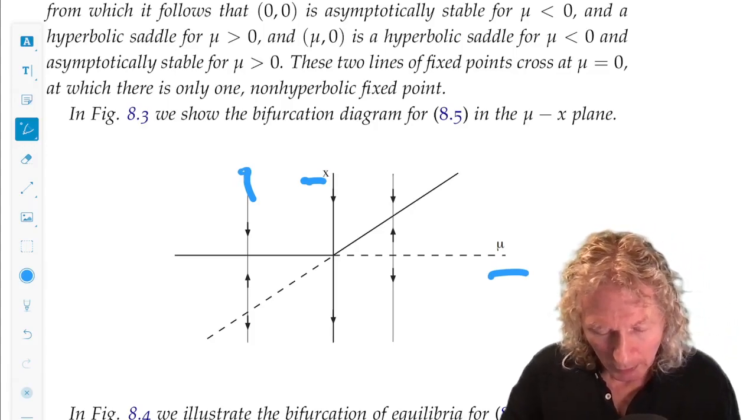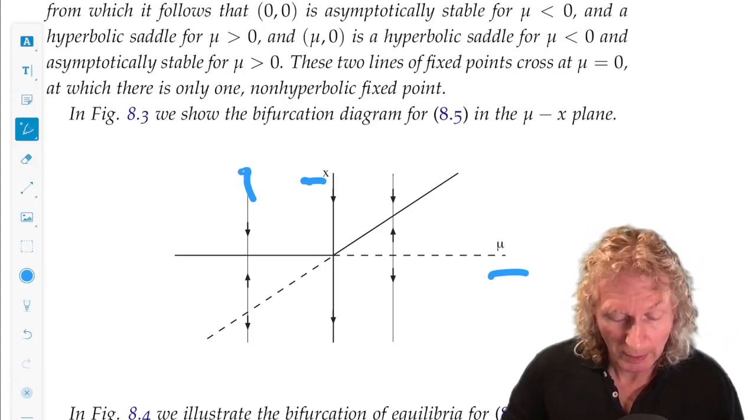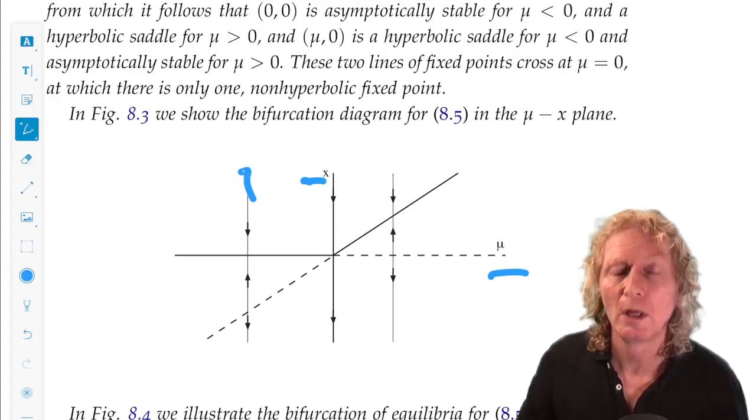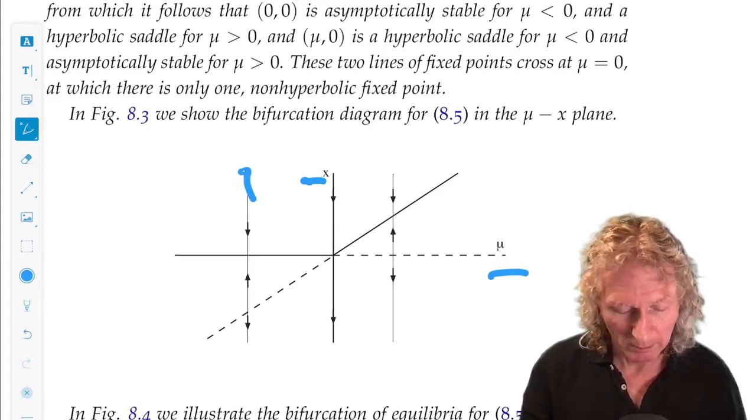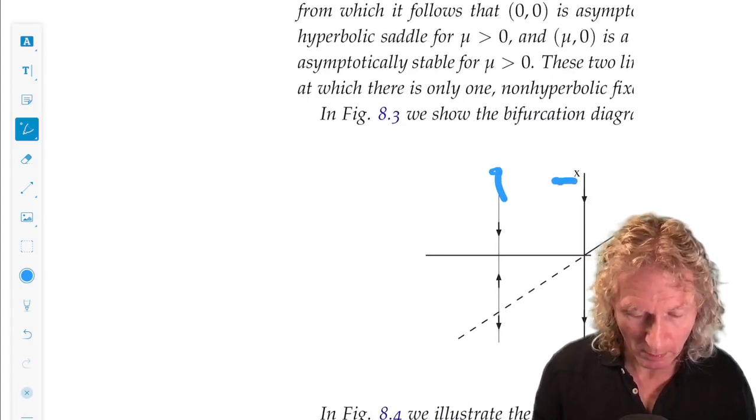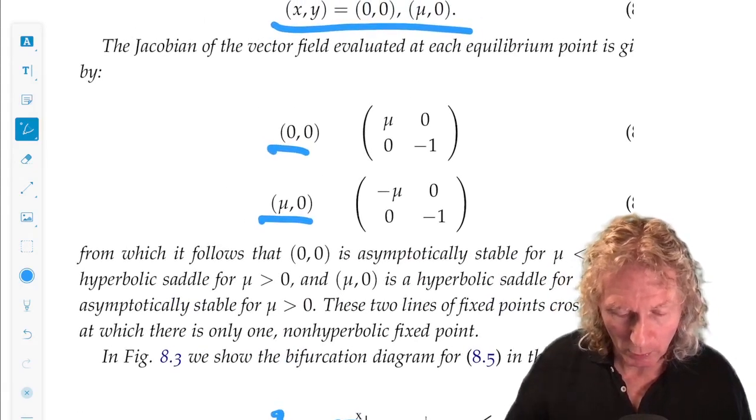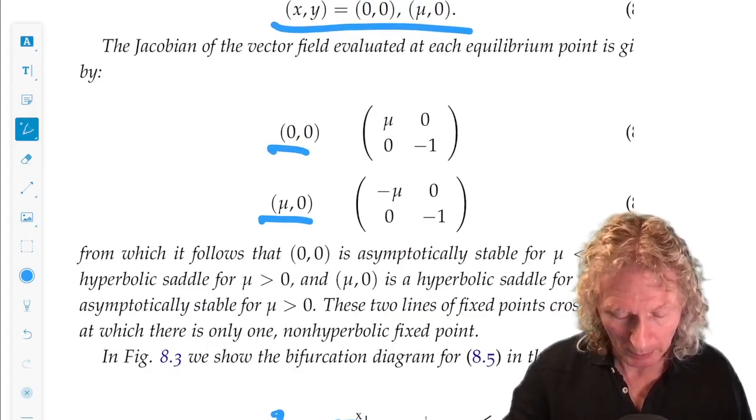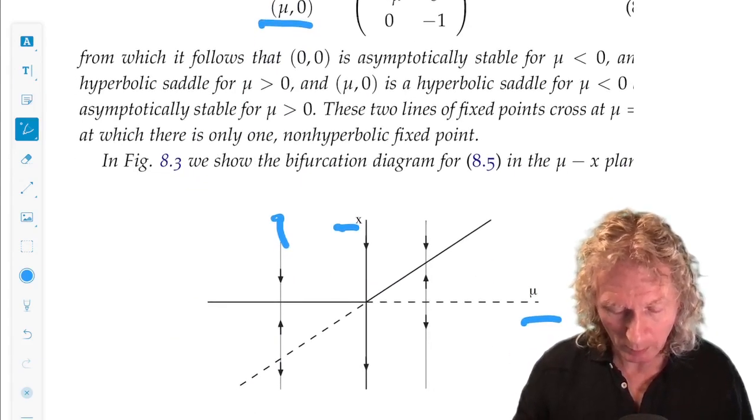As mu increases, they move together and coalesce into a single non-hyperbolic equilibrium point. You can see this from the Jacobian. mu equals 0, non-hyperbolic equilibrium, a single equilibrium point.